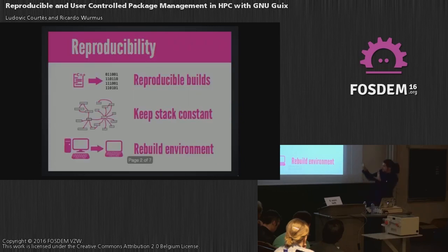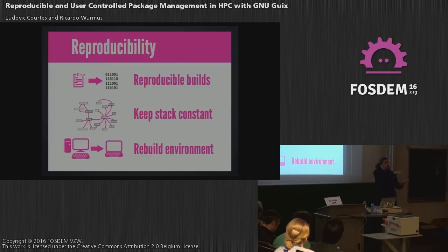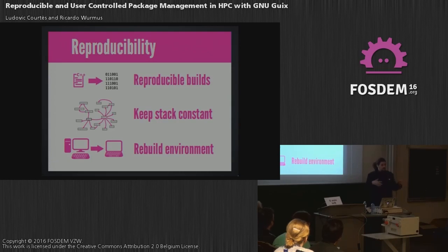Reproducible is a very vague term, so I'd like to explain it. The subset I'm interested in is reproducible builds — you have the source code and you compile it on Monday, and you compile it again on Friday, and it's still the same, exactly bit-identical. That's reproducible builds, but it's very obvious and very difficult to achieve.